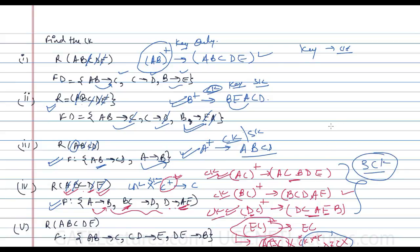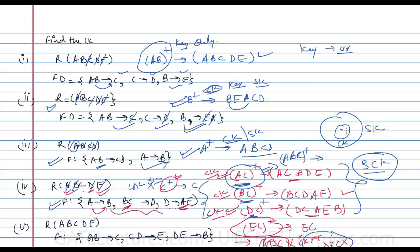So for question four there are three candidate keys: AC, BC, and DC. All are super keys, and any superset of them — like ABC — is also a super key but not a candidate key. From these three candidate keys, any one can be chosen as the primary key.